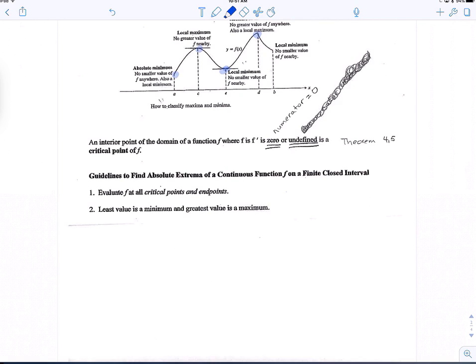And the first thing we're going to do is evaluate f at all the critical points and the end points. And then we're going to, at that point, once we have all our information, we'll choose the least value as the minimum and the greatest value as the maximum. So let's do an example of that now.